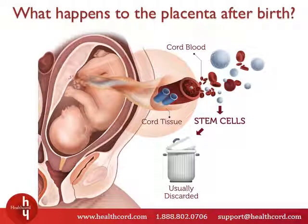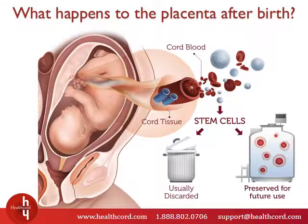Given that the placenta is a temporary organ that develops during pregnancy, shortly after the baby is born, the body also expels the placenta. In the past, once the umbilical cord was cut, the cord and the placenta were discarded as medical waste. Today, it's well established that cord blood, cord tissue, and even the placenta are sources of valuable stem cells and, when possible, should be preserved.